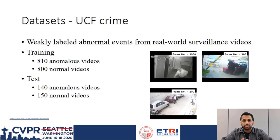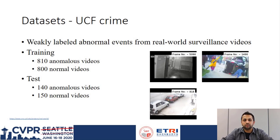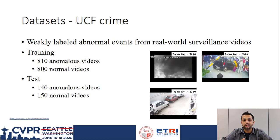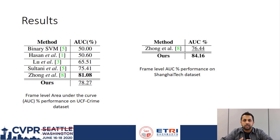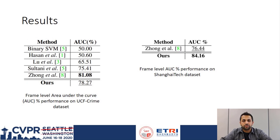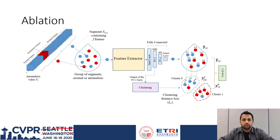UCF Crime is a dataset specifically designed for weakly-labeled training for anomaly detection, containing 13 different classes of anomalies including accident, robbery, arson, and so on. ShanghaiTech Campus dataset was initially introduced as a one-class classification problem; however, to make it suitable for weakly supervised algorithms, Zhong and his team proposed a new split of this dataset. On the UCF Crime dataset, our method outperforms several state-of-the-art methods, second only to the graph convolution-based noise cleaner. However, on the ShanghaiTech dataset, our method outperforms the graph convolution-based noise cleaner approach by a significant margin of 7.72%.